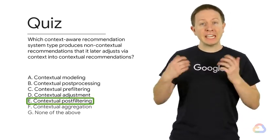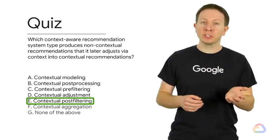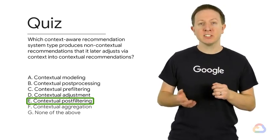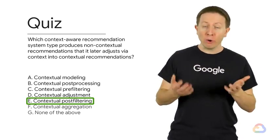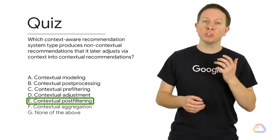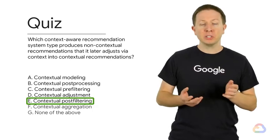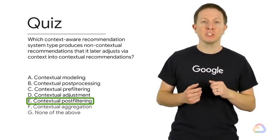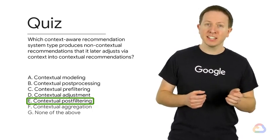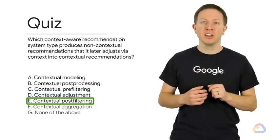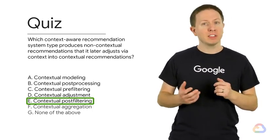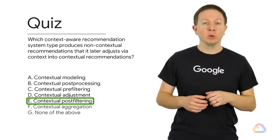The correct answer is E. Contextual post-filtering begins with our user-item multi-dimensional context tensor. It then completely ignores context and sends the data through a traditional two-dimensional user-item recommendation system, which produces non-contextual recommendations. We then use the targeted context to adjust the recommendations, as we saw with the filter and weight methods, to finally arrive at the contextual recommendations.